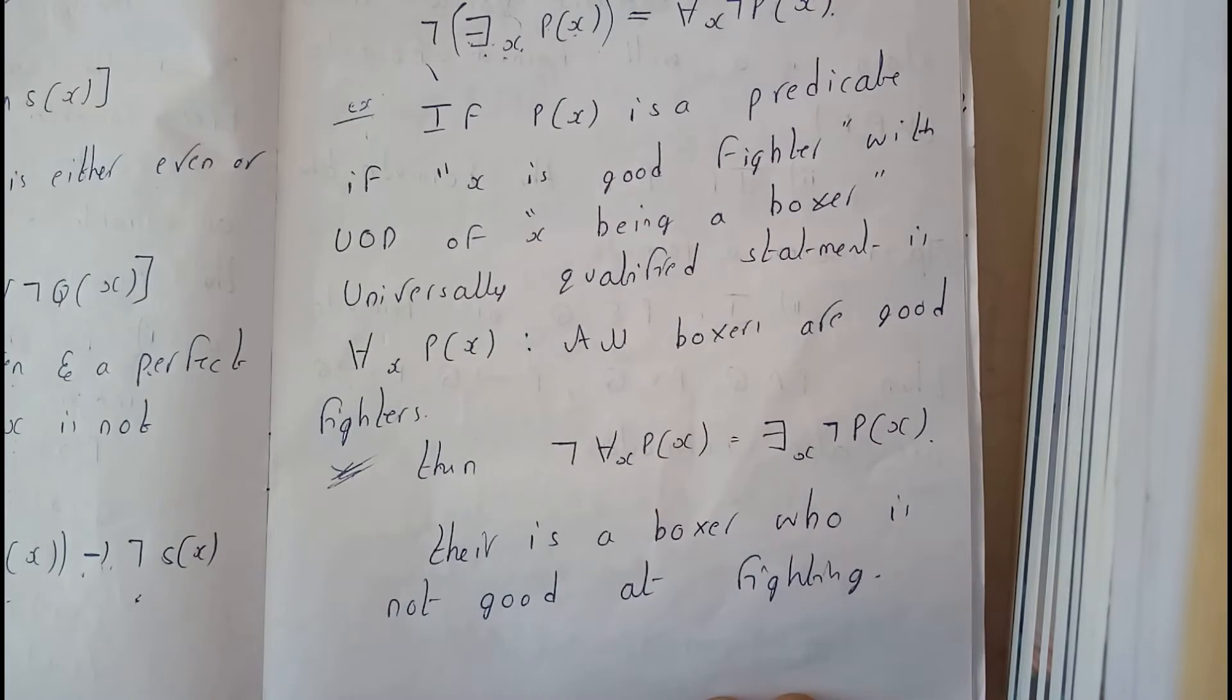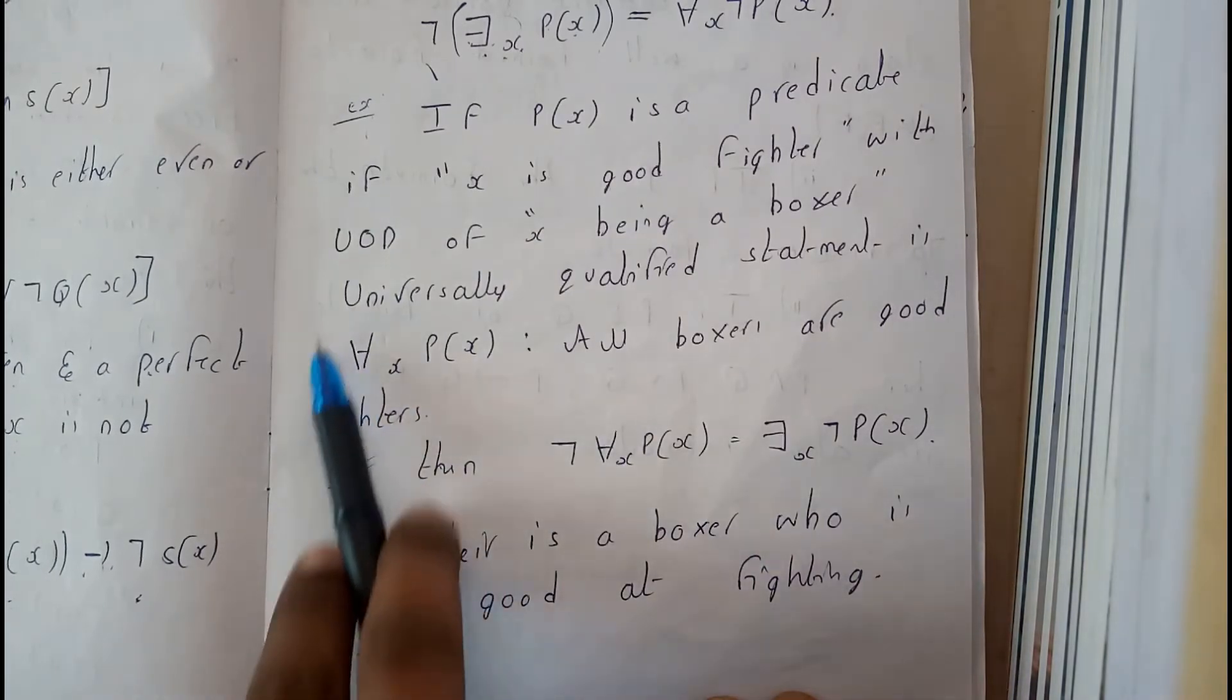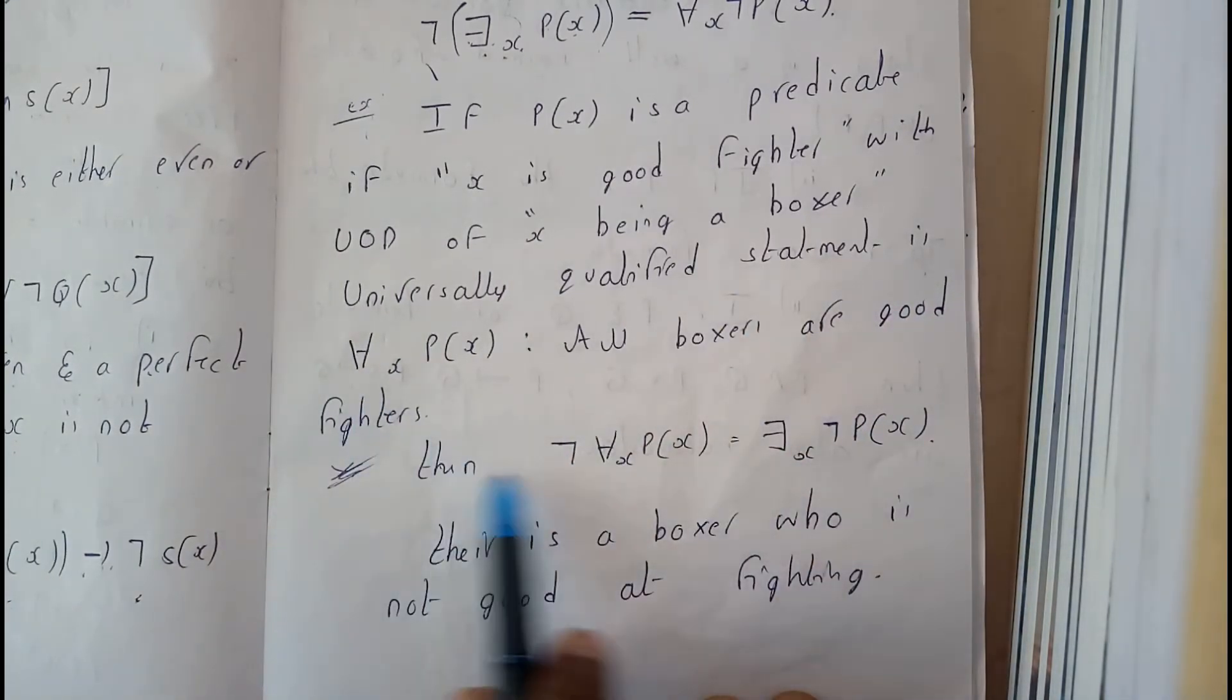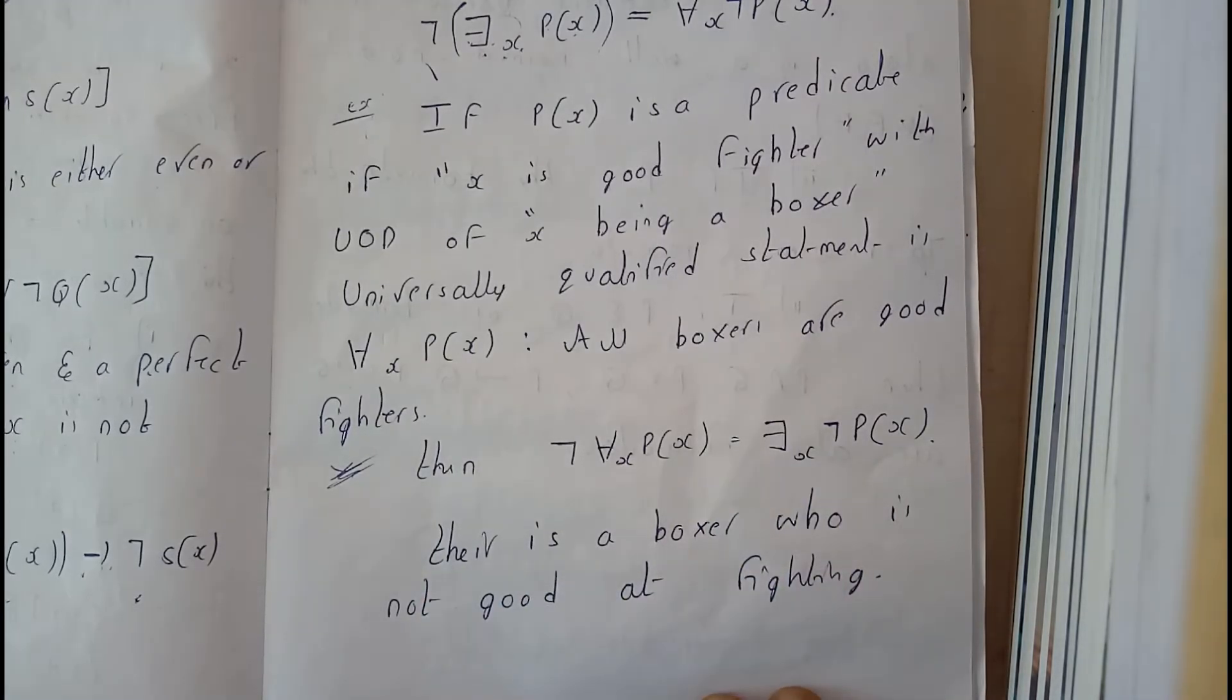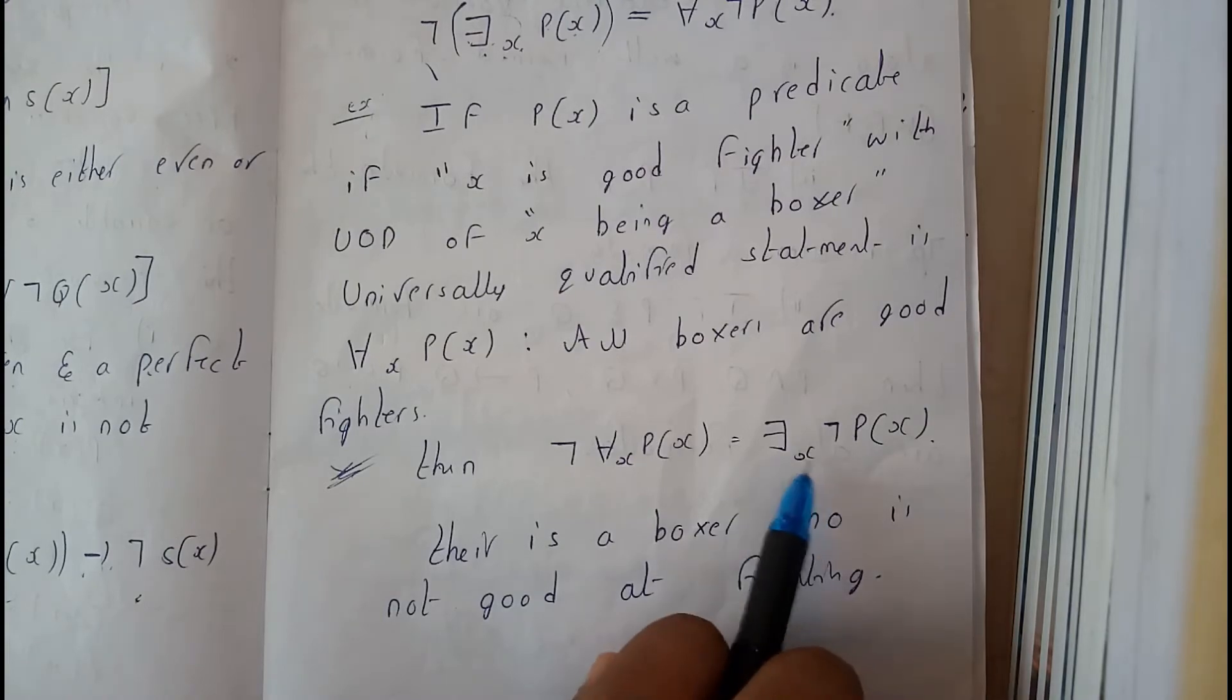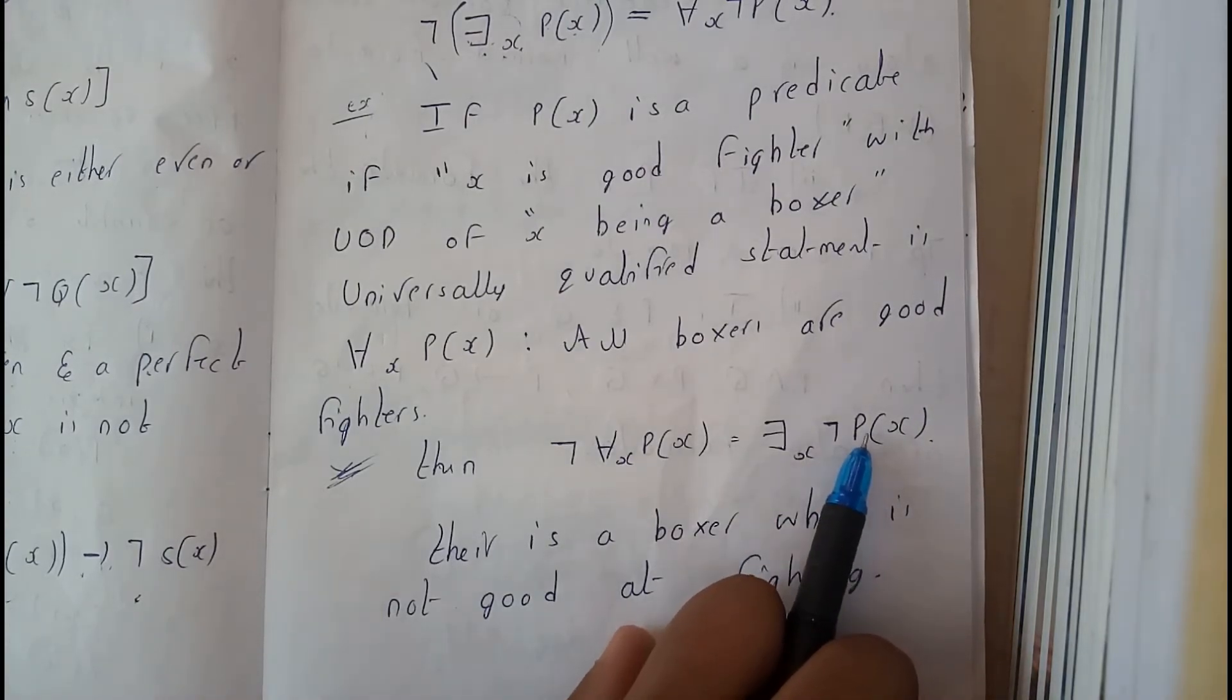All boxers are good fighters. So we need to find the negation of this. So for all, this will become there exists - there is a boxer who is not good at fighting. That's it, right? For some, negation of the original statement.